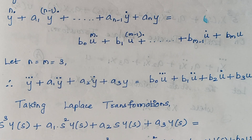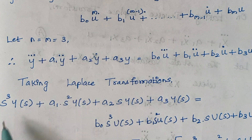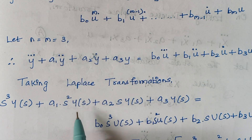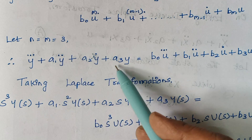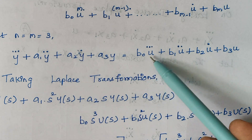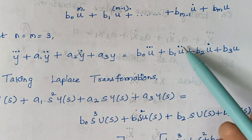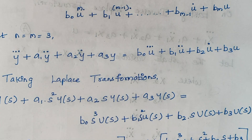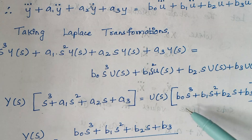The next step is taking the Laplace transform. Since y is differentiated thrice, we get s³·Y(s), plus a1 times s²·Y(s) since y is differentiated twice, plus a2 times s·Y(s) since y is differentiated once, and finally a3·Y(s) with no differentiation. Similarly for the right-hand side: b0 times s³·U(s), plus b1 times s²·U(s), plus b2 times s·U(s), plus b3·U(s).